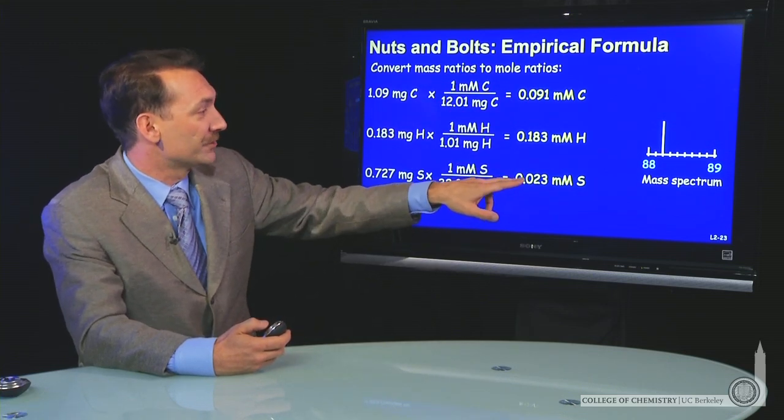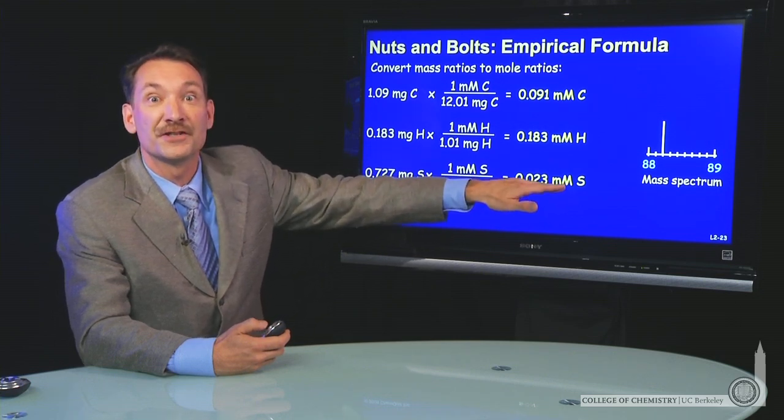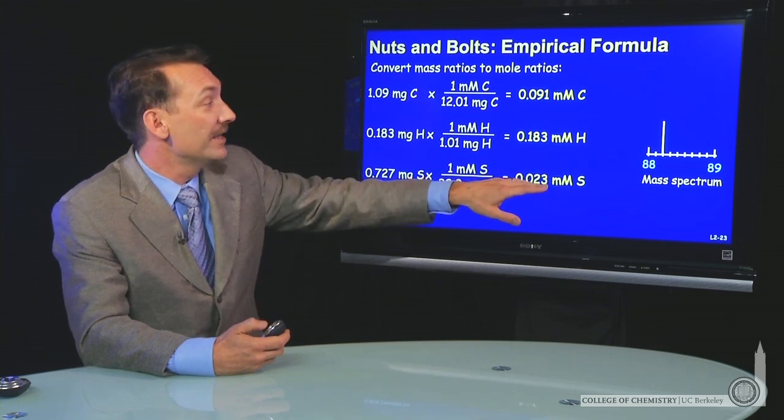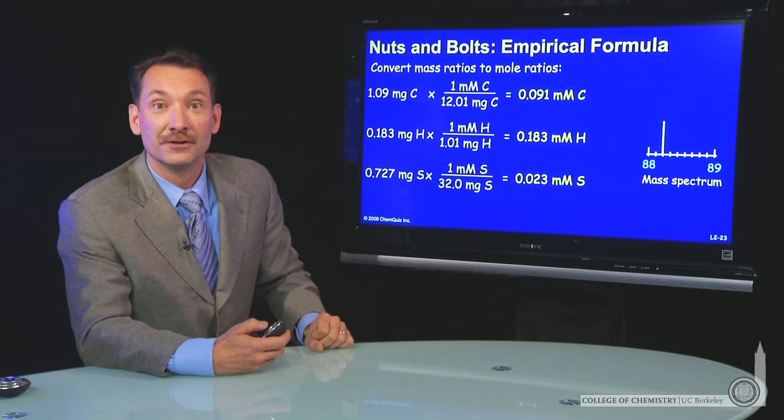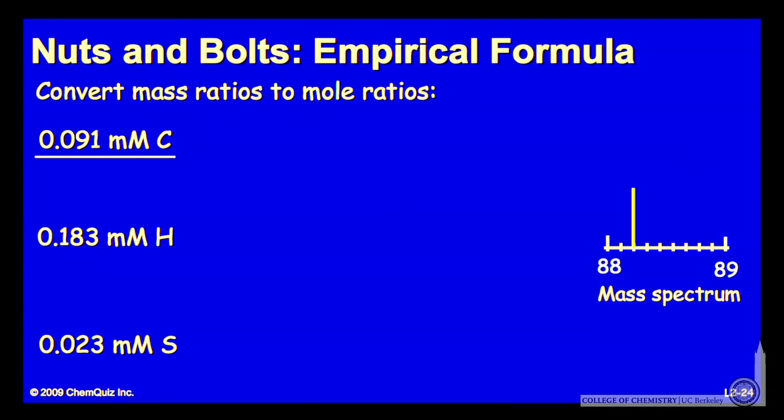So let's just take the smallest one, 0.023 millimoles of sulfur, the compound there in the smallest number of moles, and divide it into the other two to get some simpler ratios. That is, see the ratios in a simpler way. So take the 0.091 millimoles of carbon divide by the millimoles of sulfur. That's about 4.